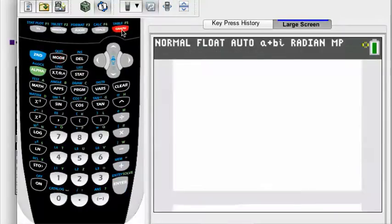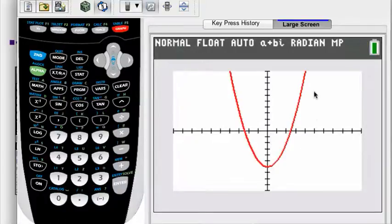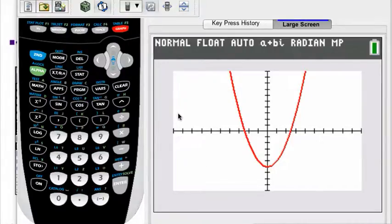When we press graph again—boom, much faster. Yeah, that's what we like. All right, so you might be wondering, hey, why do we have that thing on at all? I want it to be fast all the time.